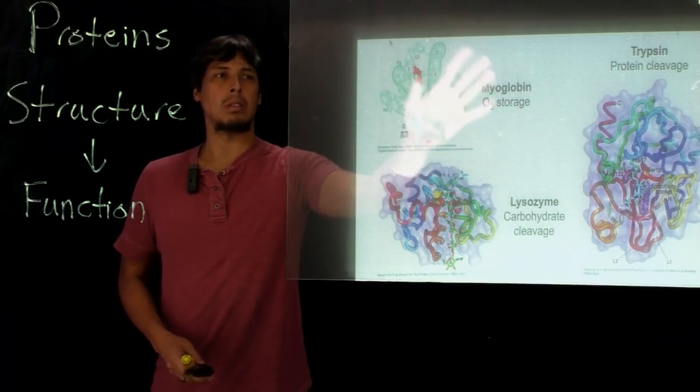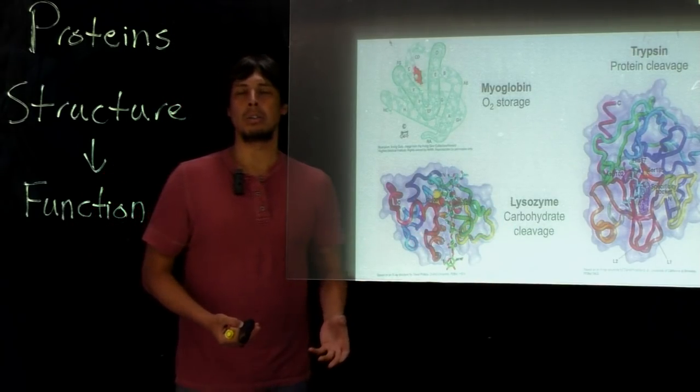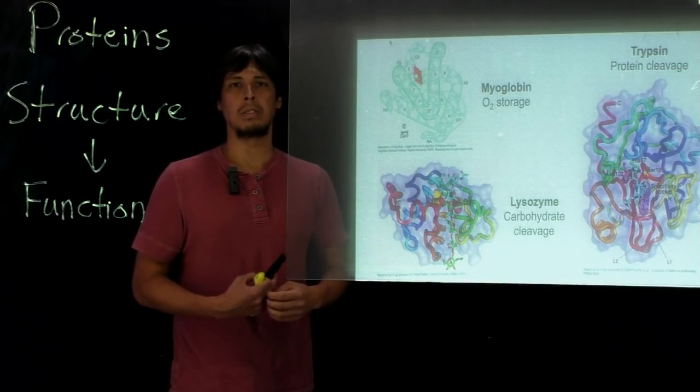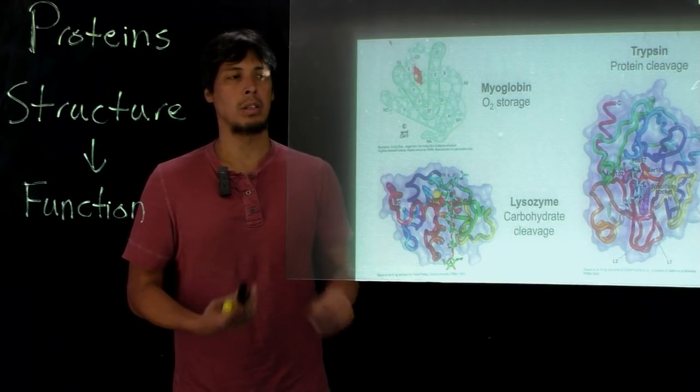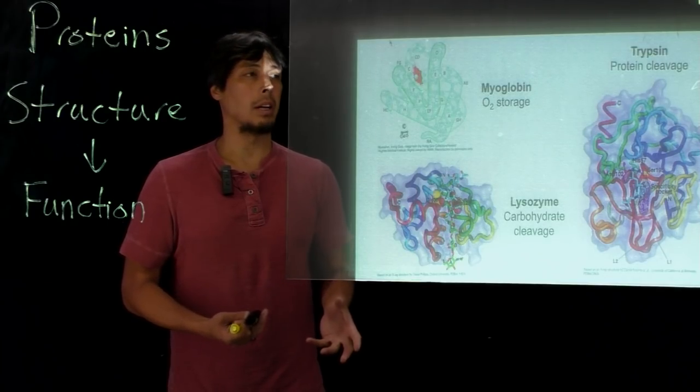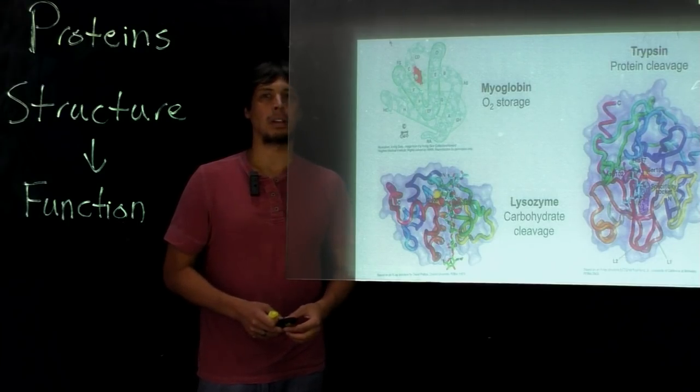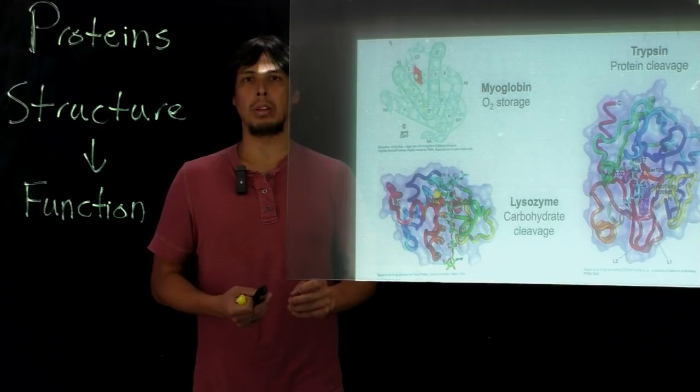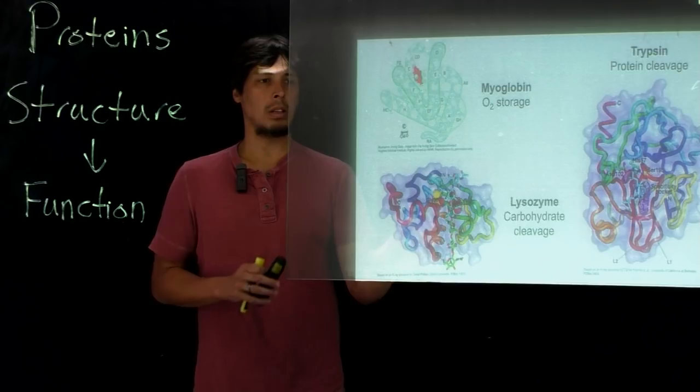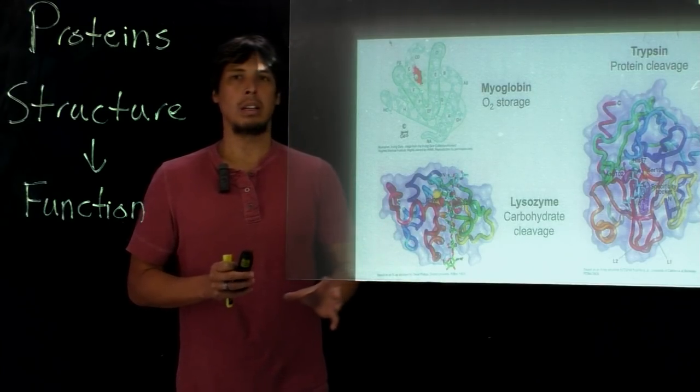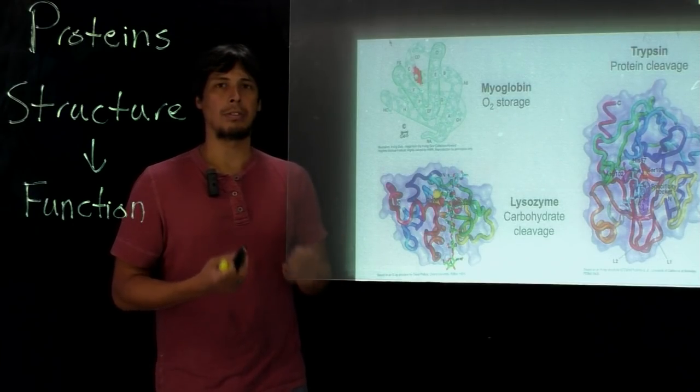For instance, in the upper left hand corner this is myoglobin which is used for O2 storage. Lysozyme down here on the bottom is for carbohydrate cleavage - importantly, it cleaves the cell wall which is composed of different carbohydrates. It can decompose the cell wall of bacteria. On the right is trypsin which can cleave proteins or polypeptides at very specific spots within the amino acid sequence. As we look at these structures, you can see that none of them are identical, and that's because the structure of the protein is really important for its function. It defines its function in fact.